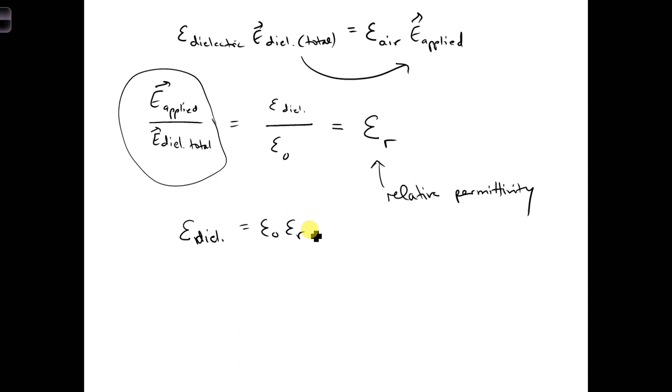The permittivity has units of farads per meter, the epsilon dielectric. Epsilon naught also has units of farads per meter, and epsilon r is unitless. It's just a factor that describes how much the electric field has reduced inside of the material relative to free space.